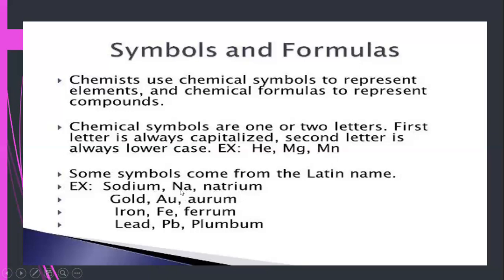We have taken Na from sodium's Latin name, natrium. Similarly, for gold we use the symbol Au, taken from its Latin name aurum. For iron we write capital F and small e — Fe — taken from its Latin name ferrum. For lead we use Pb, from plumbum.